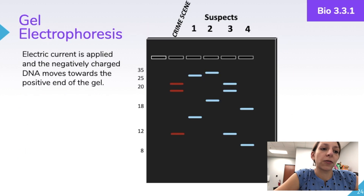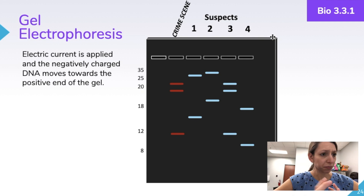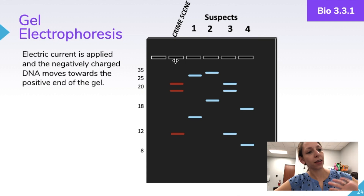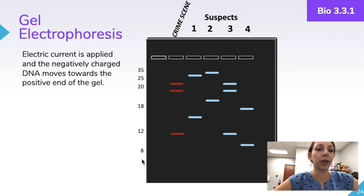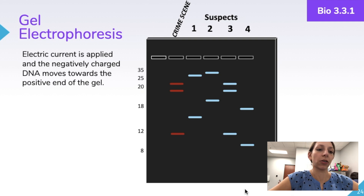In gel electrophoresis, an electric current is applied and the negatively charged DNA moves towards the positive end of the gel. You can compare the patterns of the DNA bands to see which ones match. For example, in a crime scene scenario, you can look at the crime scene sample and determine which suspect best matches the evidence based on the band patterns, and then identify your subject.